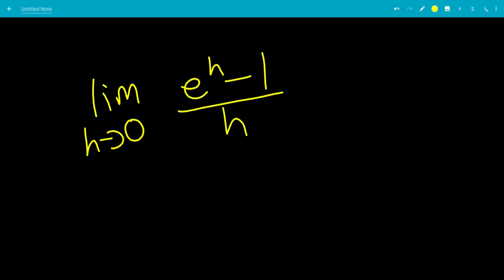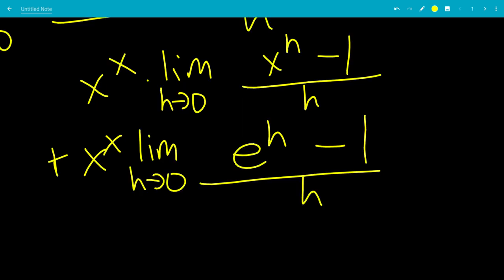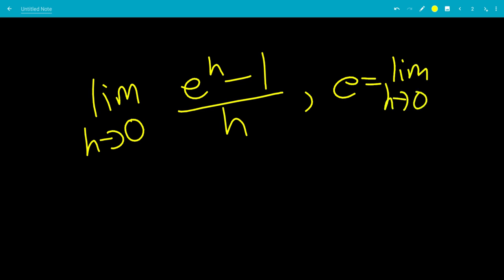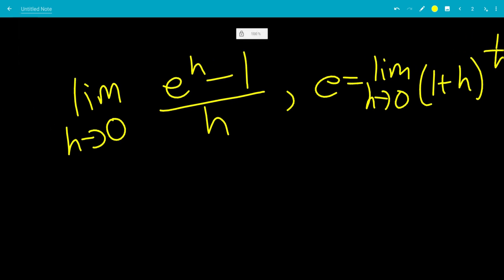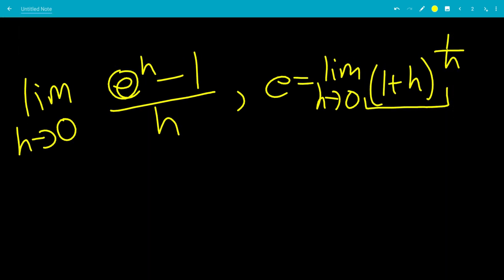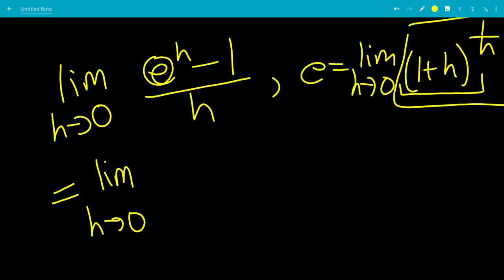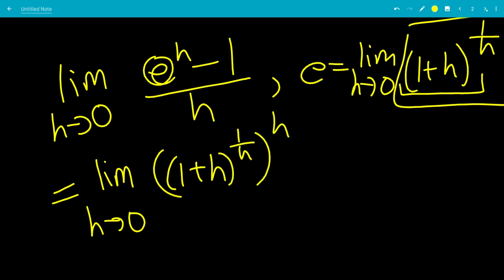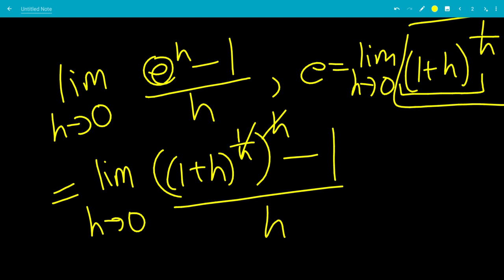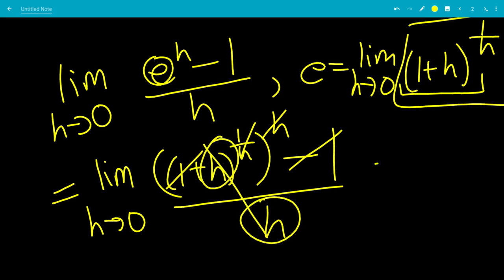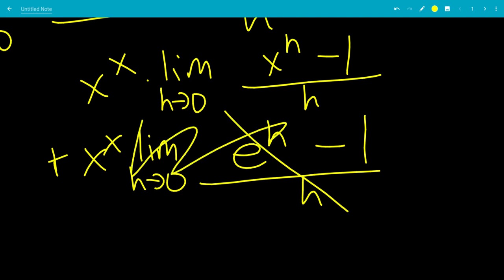So let's first look at the limit as h goes to 0 of e to the h minus 1, all over h. Using the definition that e equals the limit as h goes to 0 of 1 plus h all raised to the 1 over h, we can replace e with this definition inside the limit. That gives 1 plus h raised to the 1 over h, then raised to the h. The h and 1 over h cancel, leaving us with 1 plus h minus 1 over h, which simplifies to h over h, which equals 1.